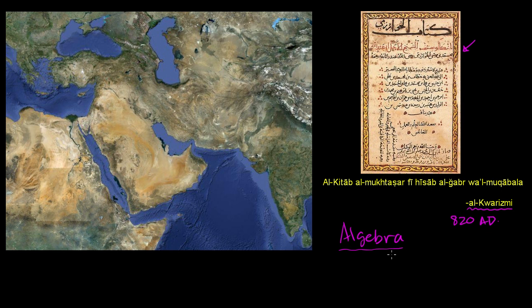Algebra is the Arabic word. Here's the actual Arabic title he gave to it. Algebra means restoration or completion. And he associated it in his book with a very specific operation — really taking something from one side of an equation to another side of an equation. But we can actually see it right over here.